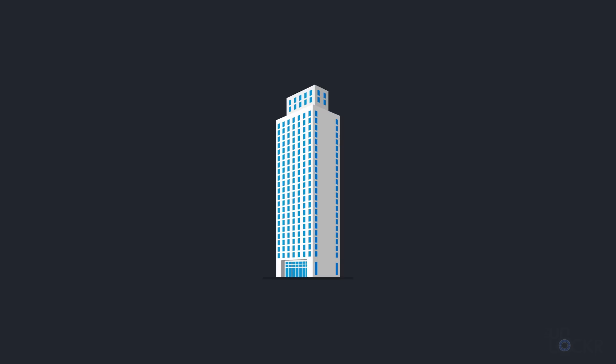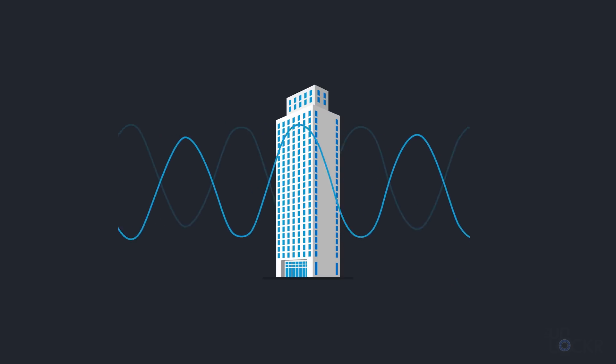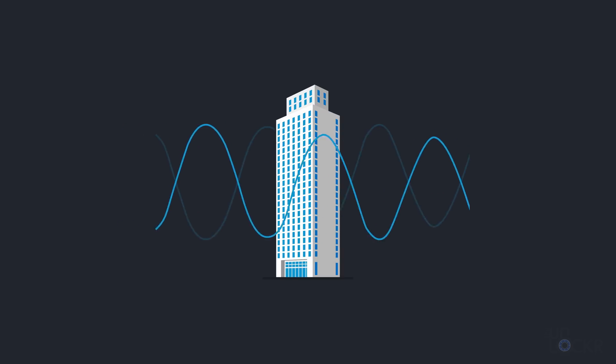Millimeter wave, for example, can be blocked by your hand, as opposed to low band frequencies that can actually go through buildings to give you signal inside. Mid-band, or sub-6, is sort of in this little interesting sweet spot where it has much higher speeds because there's a lot more bandwidth available, but it's also going to reach a lot further than millimeter wave and not be blocked by as many things.